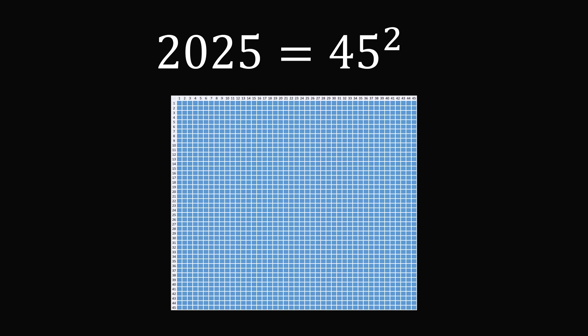2025 is a perfect square because 2025 is equal to 45 squared. These are called square numbers because they represent the areas of squares. If you had a square with a side length of 45, then its area would be 45 squared, which equals 2025.